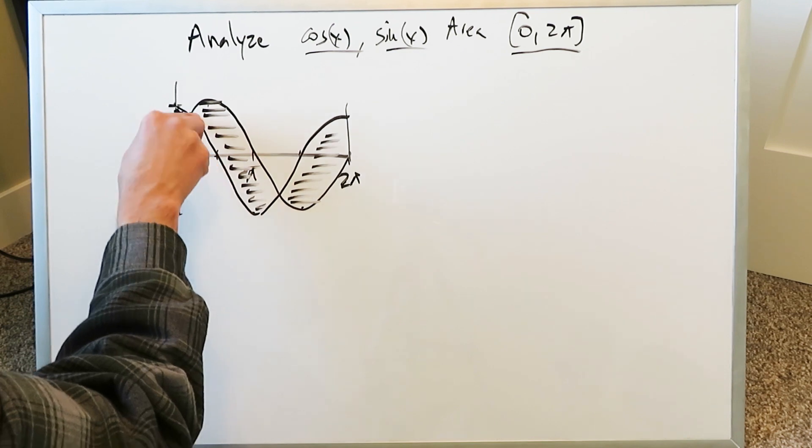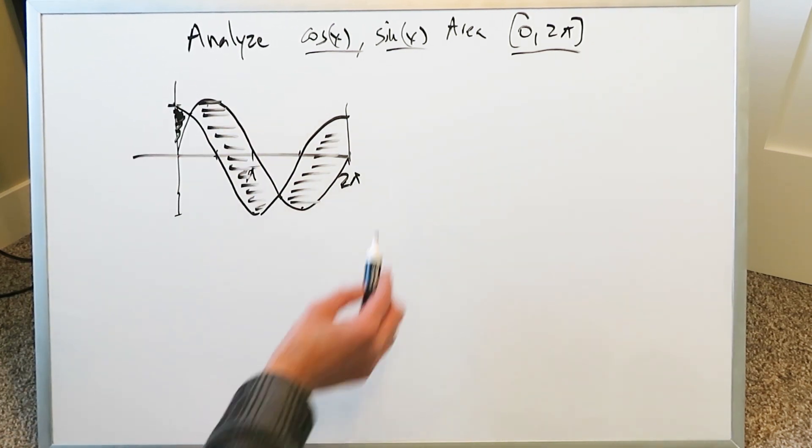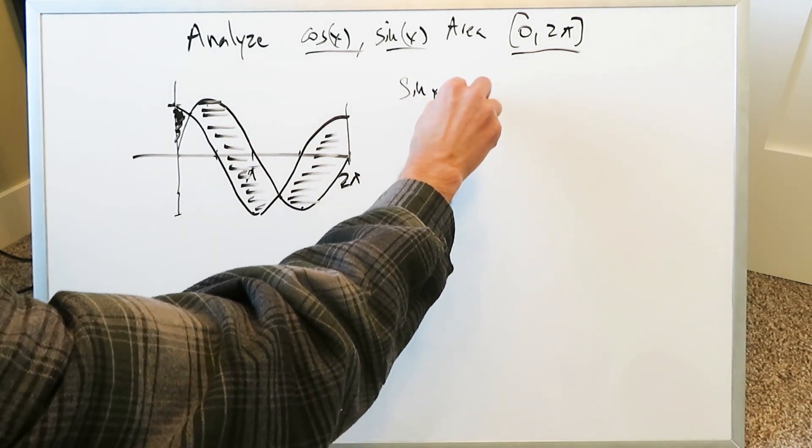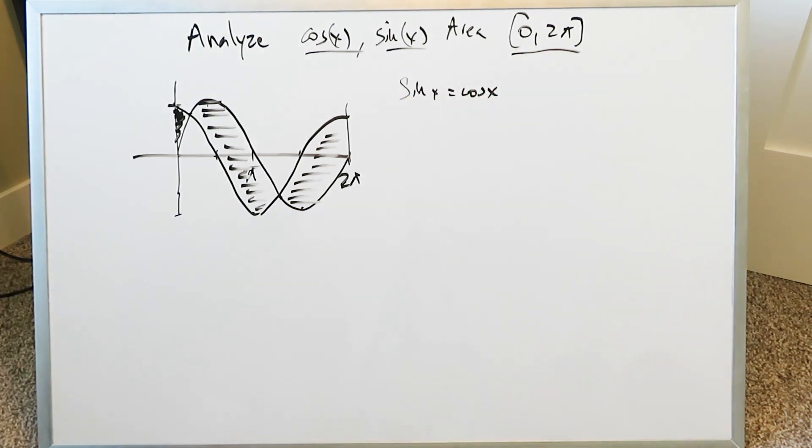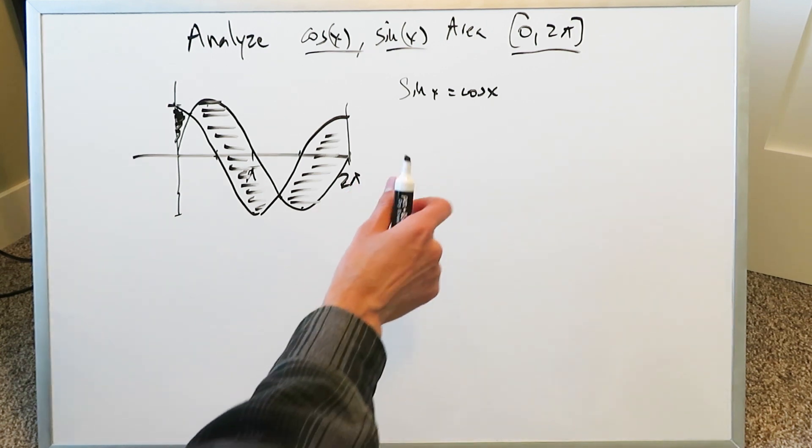What are the intersection points? We need to know them. If you set sin(x) = cos(x), you can square these out and bring in the Pythagorean trigonometric identity: sin²(x) + cos²(x) = 1.